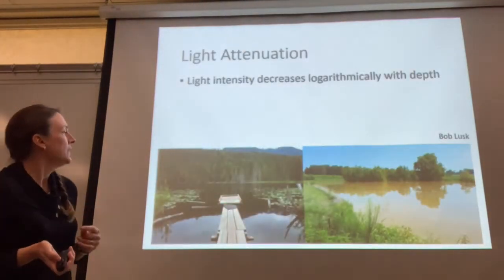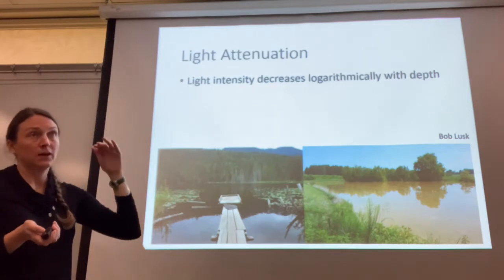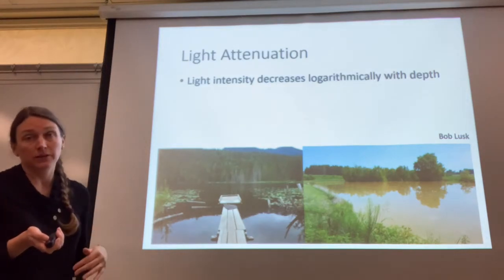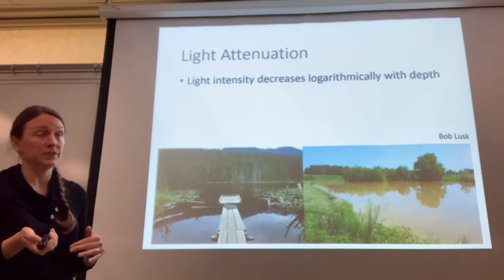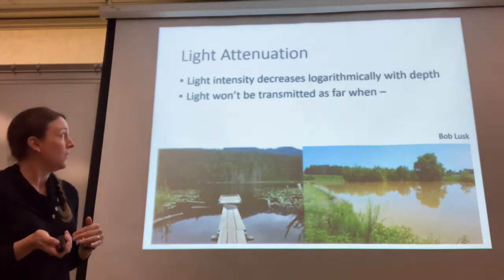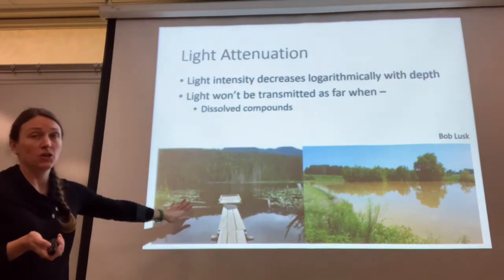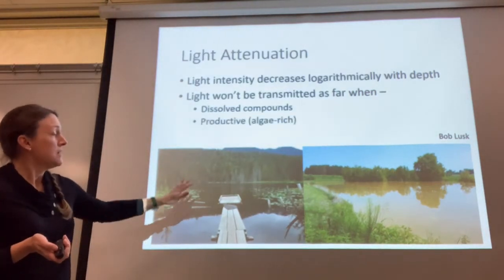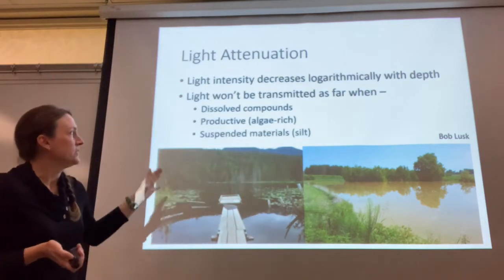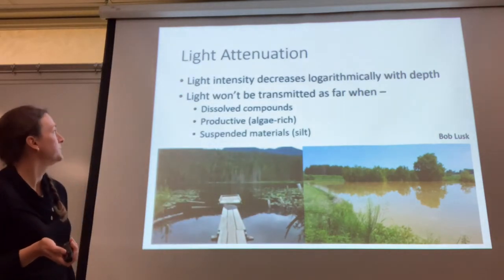Light attenuation is the concept that light intensity decreases logarithmically with depth. Light won't be transmitted as far, especially if there are dissolved compounds like humic substances in the lake, if it's a productive algae-rich lake, or if there are suspended materials like silt in the water.